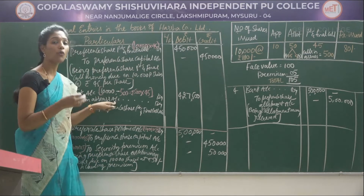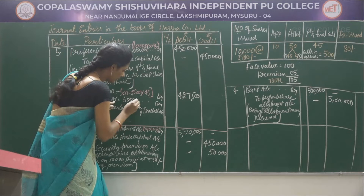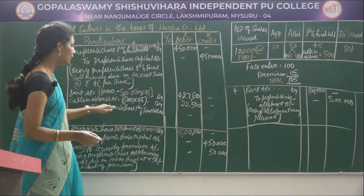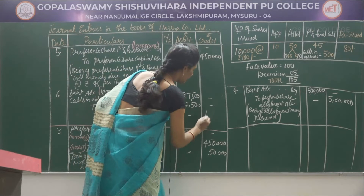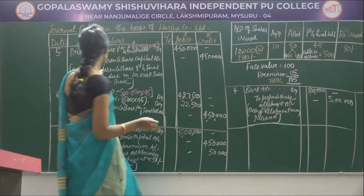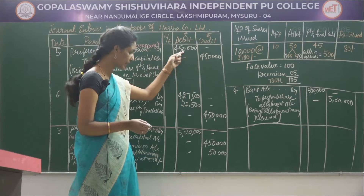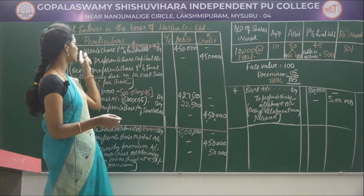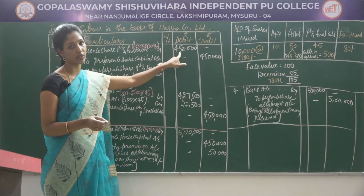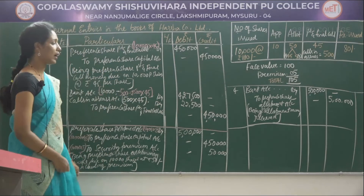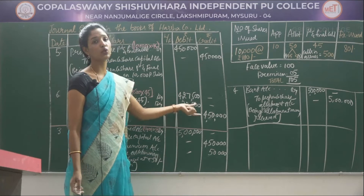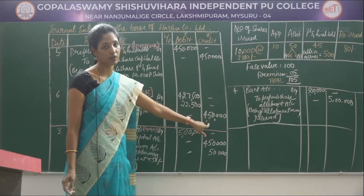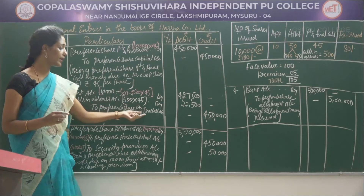Calls in Arrears: 500 shares × Rs 45 = Rs 22,500. To Preference Share First and Final Call Account: Rs 4,50,000 (same as the previous transaction). Debit totals: Rs 4,27,500 plus Rs 22,500 = Rs 4,50,000, which equals the credit total. Narration: Being preference share first and final call money received on 9,500 shares at Rs 45 per share.